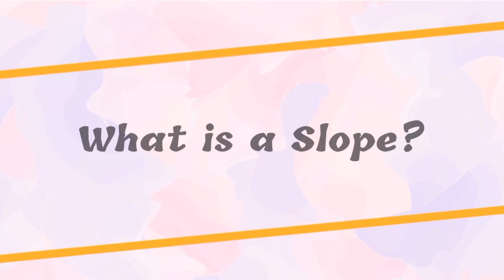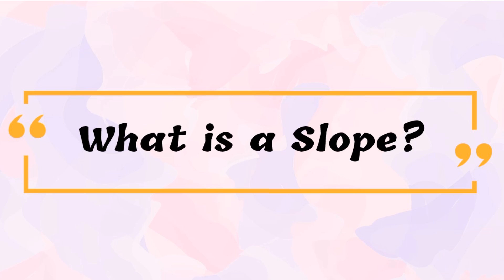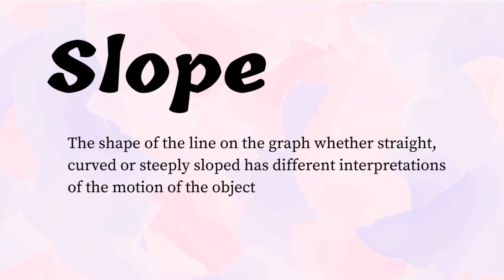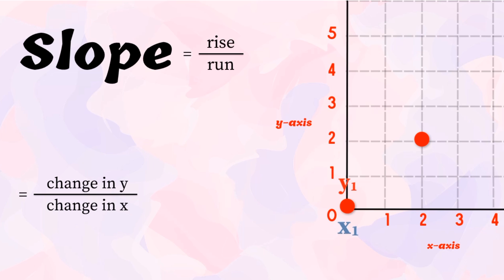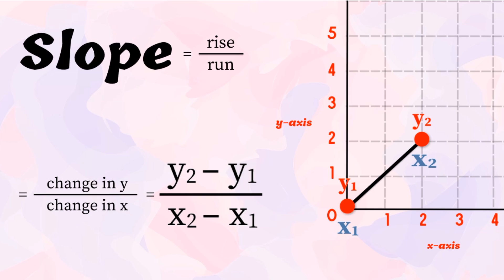To better understand the position-time graph, we need to understand the meaning of slope. The slope is the slant or angle of the line in the graph. Whether straight, curved, or steeply sloped, the shape has different interpretations of the object's motion. In mathematics, the slope of a line is the rise over the run, or the change in y divided by the change in x. If you pick two points — (x₁, y₁) and (x₂, y₂) — the slope equals (y₂ − y₁) divided by (x₂ − x₁).